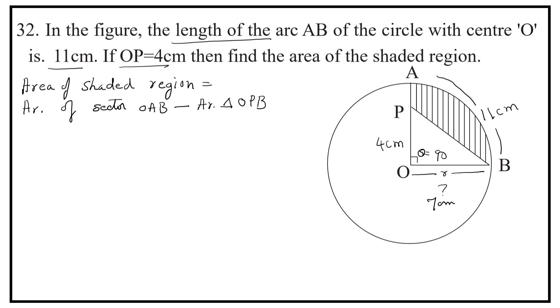The formula for area of sector OAB is equal to theta by 360 into pi R square. Area of the triangle OAB is equal to 1.5 into OB into OP. Now, let us substitute the values.